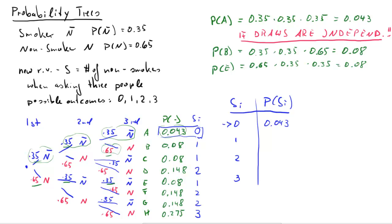Now, if we are interested in the probability of S equals one, so one non-smoker out of three, we have three of the branches. Now, these branches are mutually exclusive.